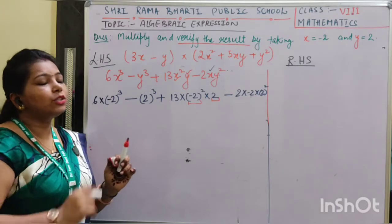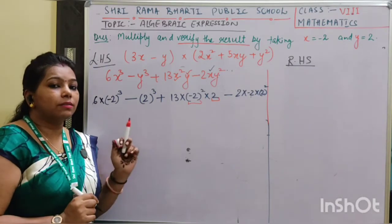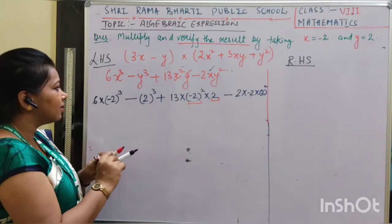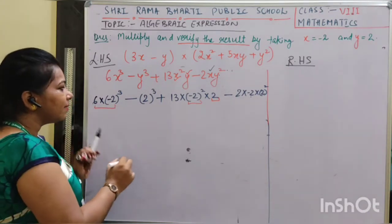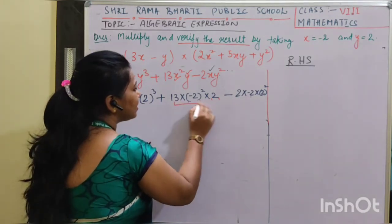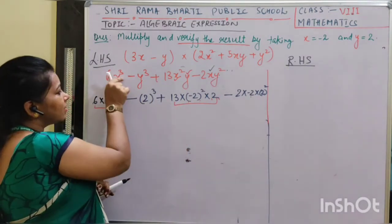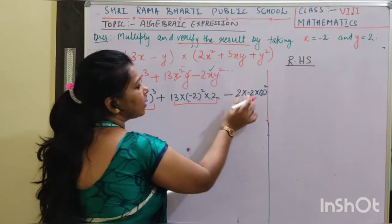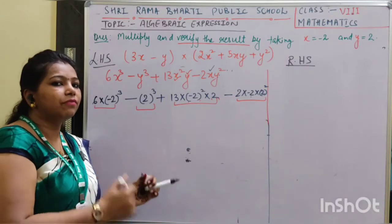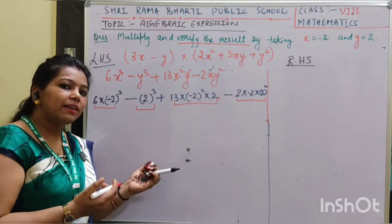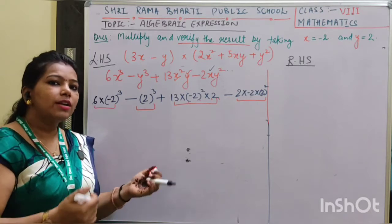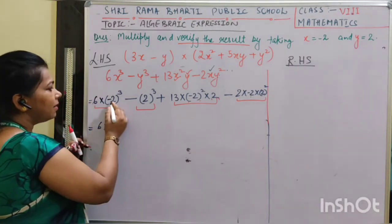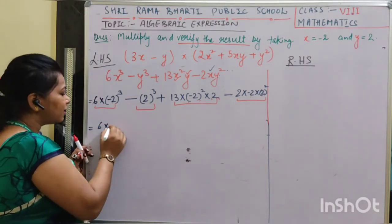Now the important thing to notice is where most mistakes occur — we can confuse where to multiply and where to subtract. Just see carefully: these are all multiplying each other within each term. As per order of operations, we multiply first and then go for addition or subtraction. So here, 6 times (minus 2) cubed: minus 2 times minus 2 times minus 2 equals minus 8.